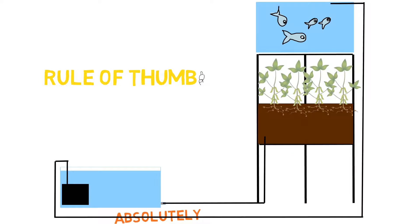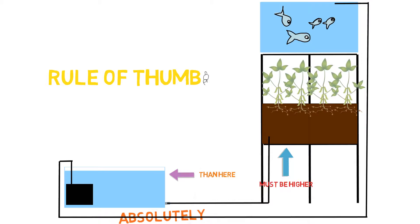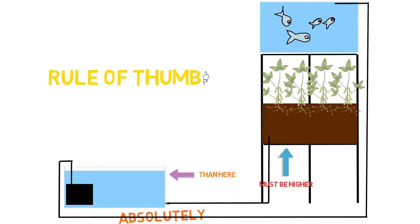We're dealing with gravity here, so we have to respect gravity. In order for you to do this, you have to make sure that your grow bed is higher than the sump tank, than the highest point in the sump tank.